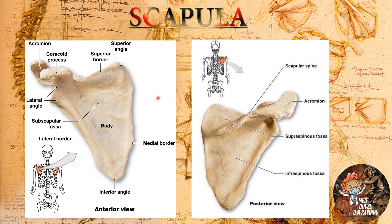The scapula has three different angles: the superior angle, the lateral angle, and the inferior angle. The scapula also has three different borders: the medial border, the superior border, and the lateral border.